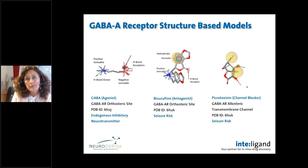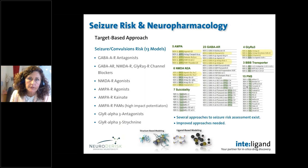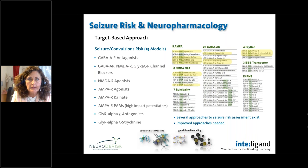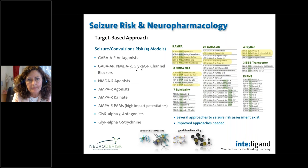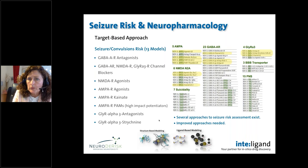We can use these 3D pharmacophore models to predict pharmacology but also neurotoxicity. For seizure risk and neuropharmacology predictions, we have 13 models in the NeuroDeRisk toolbox encompassing NMDA receptor agonists, glycine receptor alpha-3, GABA-A channel blockers, NMDA agonists, AMPA agonists, kainate interactions with AMPA, high-impact positive allosteric modulators of AMPA receptors which are associated with seizure risk, and glycine receptor antagonists including strychnine. We can use both structure-based and ligand-based methodologies for developing those models.